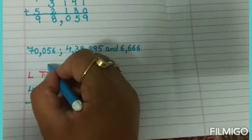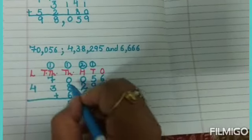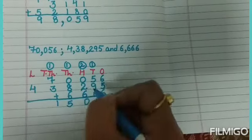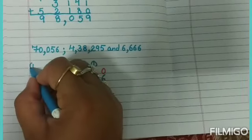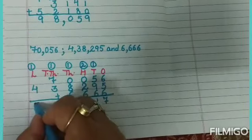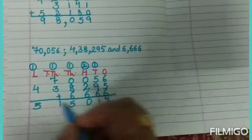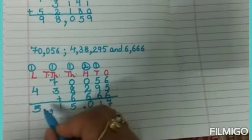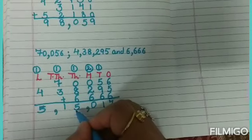1 plus 5 equals 6, 6 plus 8 equals 14, 14 plus 6 equals 20. Write 0, carry over 2. 2 plus 0 equals 2, 2 plus 3 equals 5, 5 plus 0 equals 5. Write 5, carry over 0. 0 plus 7 equals 7, 7 plus 4 equals 11. Write 1, carry over 1.